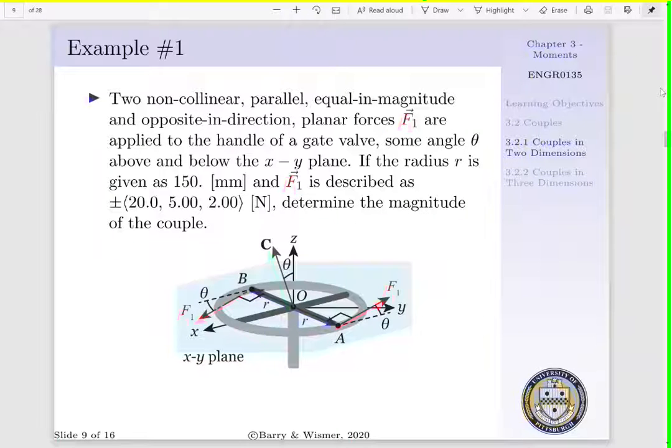Let us look at an example of this. Say we have two non-collinear, parallel, equal magnitude, and opposite direction planar forces denoted as F1. These are applied to the handle of a gate valve at some angle theta above and below our xy plane. If the radius of our gate valve is given as 150 mm, and F1 is described as plus minus 20.0, 5.00, and 2.00 newtons, we want to determine the magnitude of our couple. That is, we want to determine the magnitude of C.